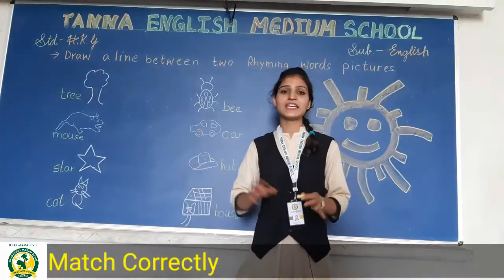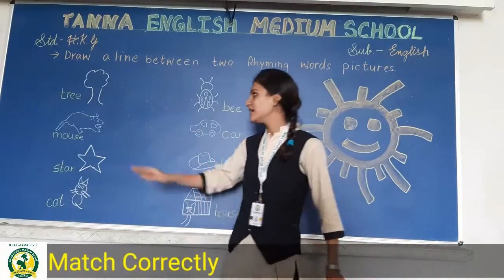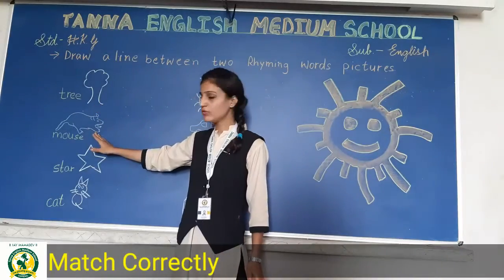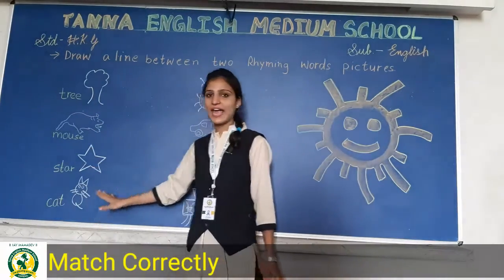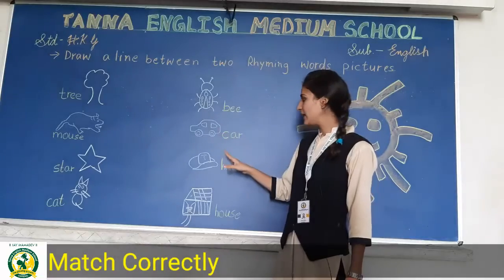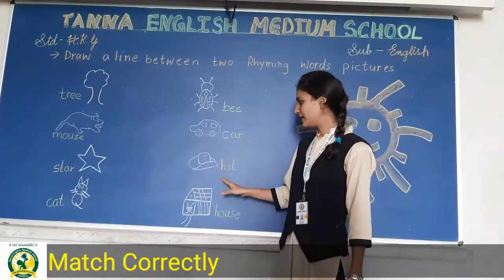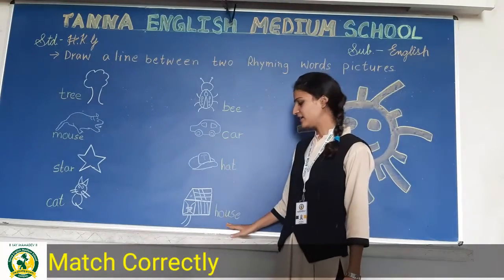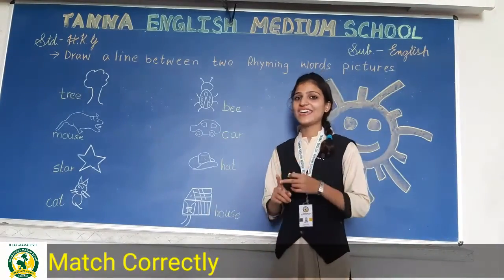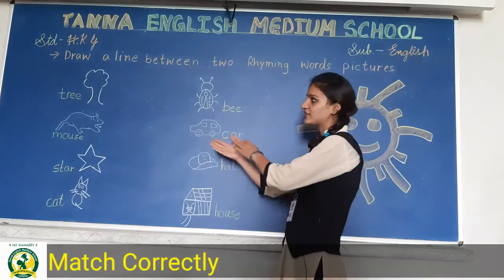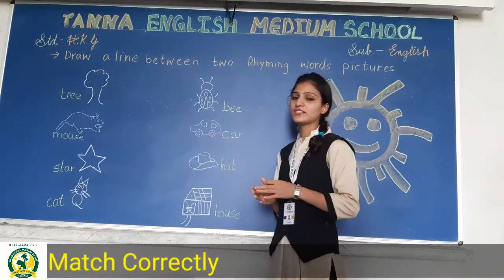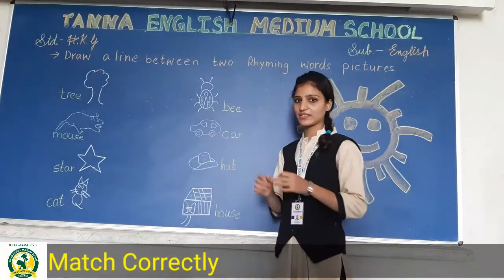तो आपको students मेरे साथ करना है rhyming words को match. तो पहले हम pictures देखते हैं किसकी है: tree, mouse, star, cat, bee, car, hat, house. जिसके जो same rhyming words हैं उसको match करना है.